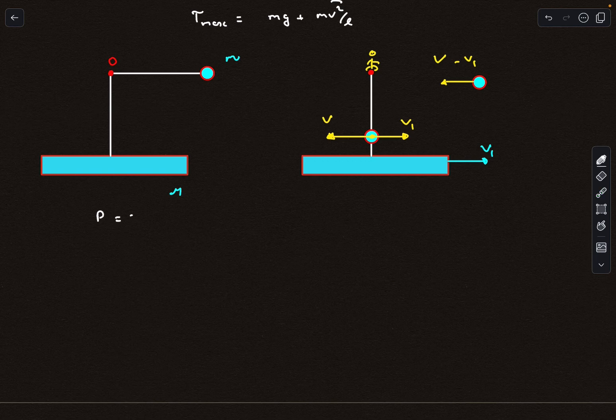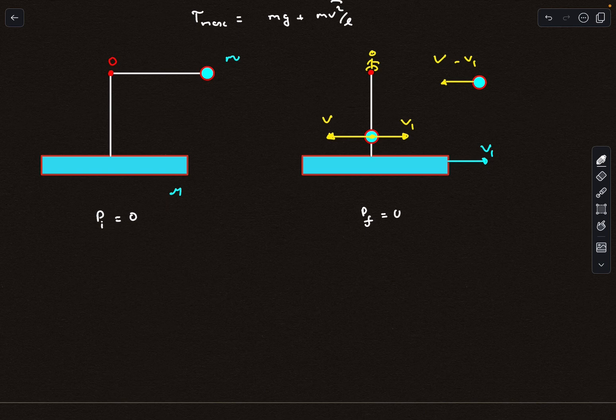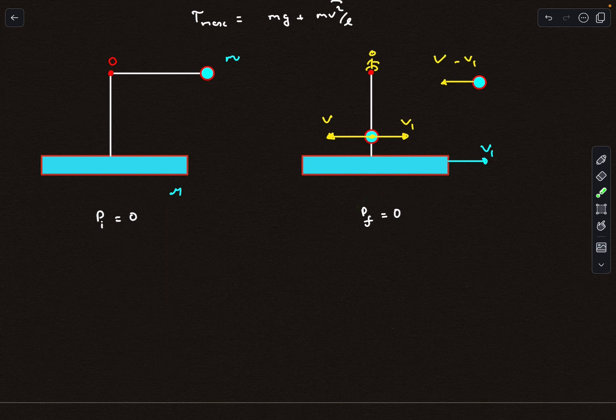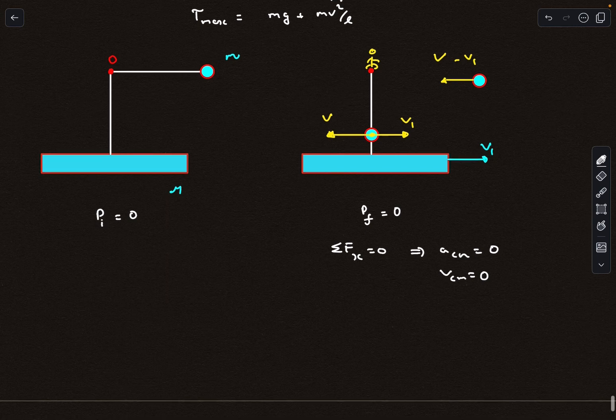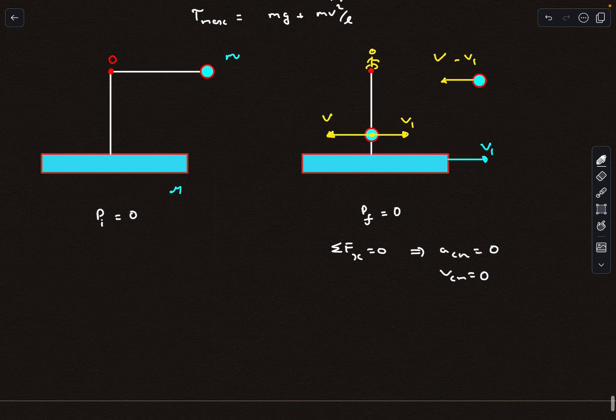Initially the momentum is zero, and there is no external forces in the horizontal direction. So final momentum also should be zero. As there is no net force in the X direction, the acceleration of the center of mass of the system would be zero, which means the CM won't move in the X direction, which means the velocity of the center of mass will also be zero throughout the duration of the motion. The center of mass will remain at the same position, so we can take the help of the center of mass frame here.